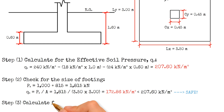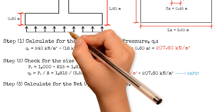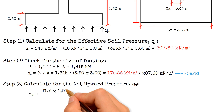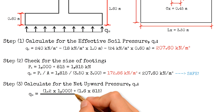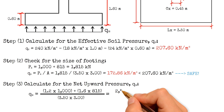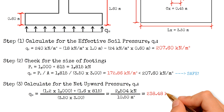The third step is to calculate the net upward pressure Q_U, which equals the factored load (1.2 × dead load + 1.6 × live load) divided by the area of footing. The result is 238.48 kN per square meter.